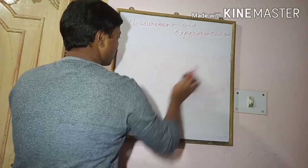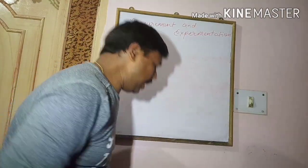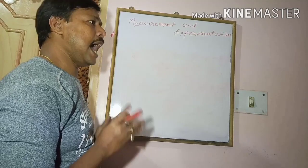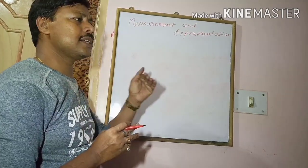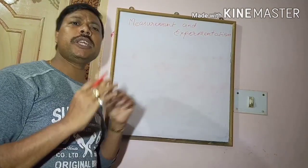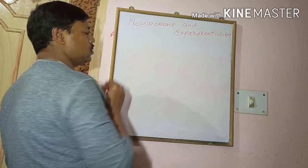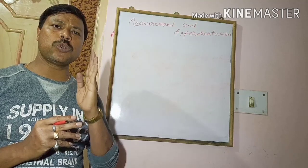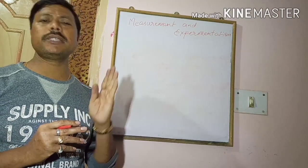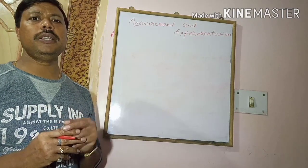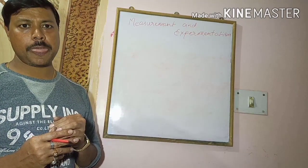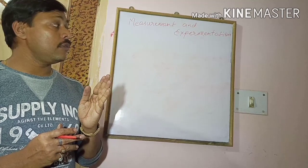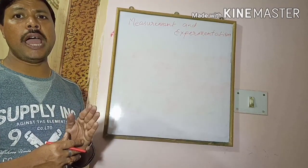We can select a constant quantity as a unit, but there are certain requirements. Not all quantities can be considered as a unit. The requirements are: it should not change with space and time, and it should be reproducible.